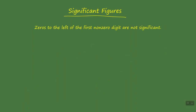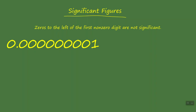That brings us to our third guideline: zeros to the left of the first non-zero digit are not significant. We have a decimal point followed by eight zeros and then the number one. The number one is the first non-zero digit in this example. Everything to the left of it — all of the zeros to the left of it — are not significant. This value has one significant figure in it.